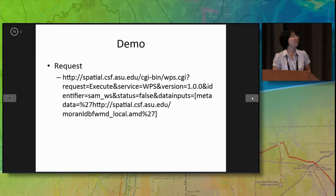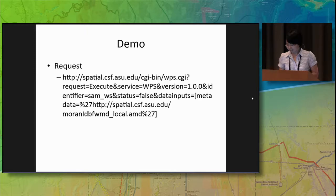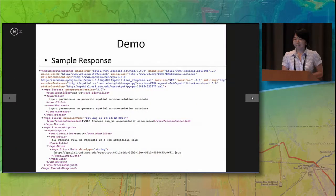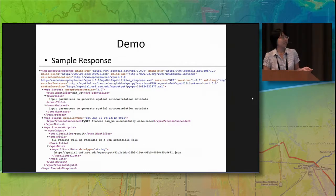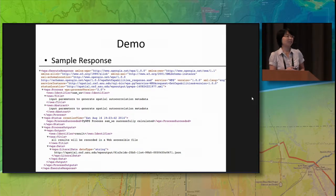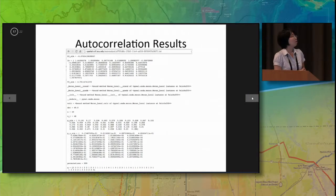This is a GET request that sends an execute request to the OGC WPS by providing the provenance information in the link. The sample response is encoded in XML-based format. Implementing it as an OGC web processing service has the advantage that it can be made interoperable with other systems.